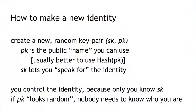If we're going to treat public keys as identities, one consequence is that you can make a new identity whenever you want. You just create a new random key pair SK and PK by doing the generate keys operation in our digital signature scheme. PK is then the public name of that identity — though in practice you'd probably use the hash of PK because public keys are big. SK, the secret key, is the information that lets you speak for the identity. You control it because only you know the secret key. If the public key looks random, nobody needs to know who you are — you can generate a fresh identity that only you can control.